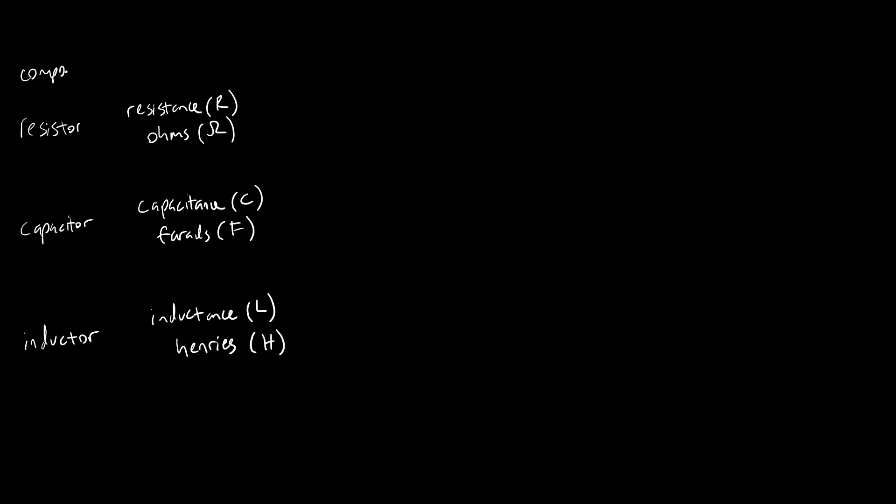So here we have components and their variable unit plus the abbreviations. Each one of these things has an equation that mathematically describes its behavior. For a resistor we have Ohm's law, V equals IR.